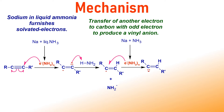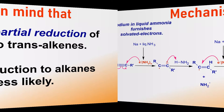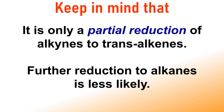Finally, the vinyl anion abstracts a proton from ammonia to furnish trans-alkene as the major product. Keep in mind that this reaction is only a partial reduction or hydrogenation of alkynes to trans-alkenes; further reduction to alkanes is less likely.